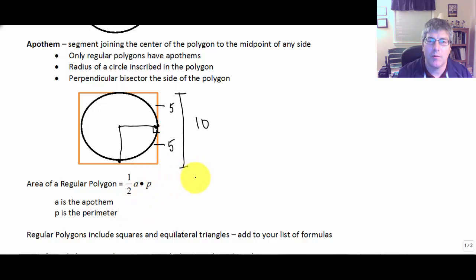So I could use my square here, and my apothem here is 5. So for my square, 1/2 times 5 times 40. So my area is going to be 5 times 20 or 100 units squared.